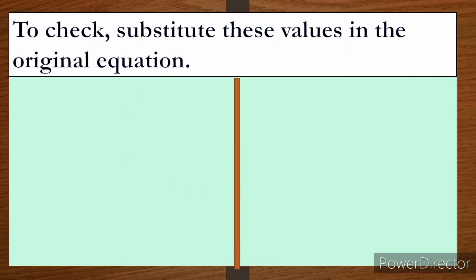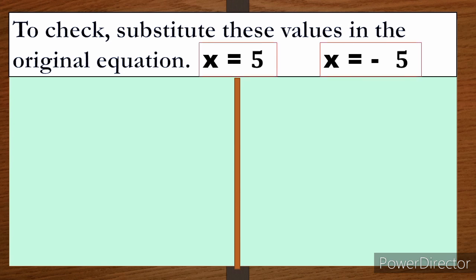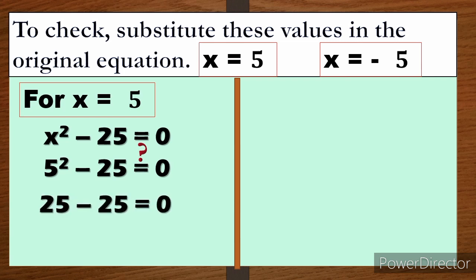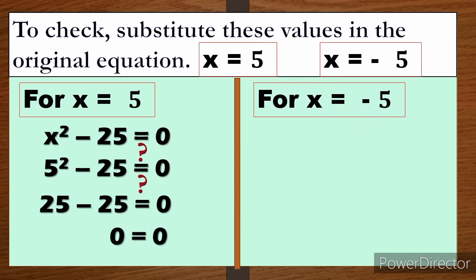To check if our answers are correct, we substitute these values into the original equation x² - 25 = 0. For x = 5: we get 5² - 25 = 0, which gives 25 - 25 = 0, so 0 = 0. Since they are equal, the value x = 5 is correct.